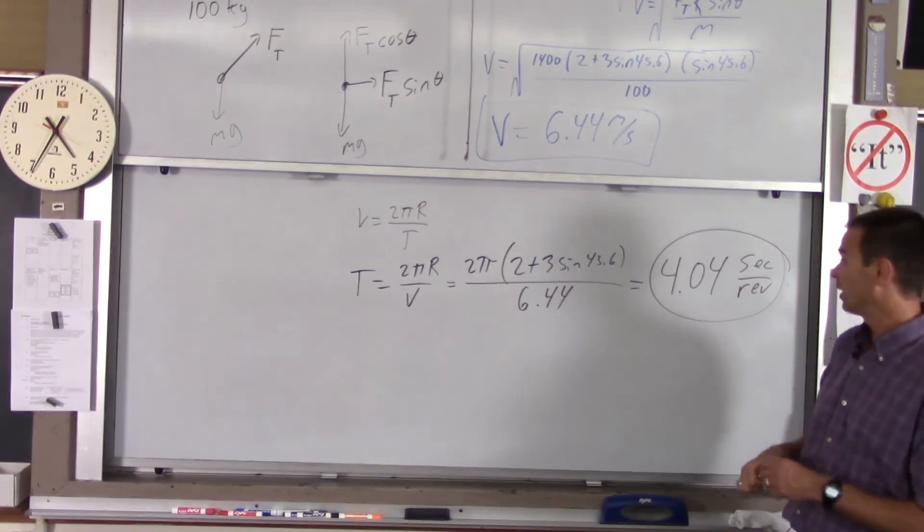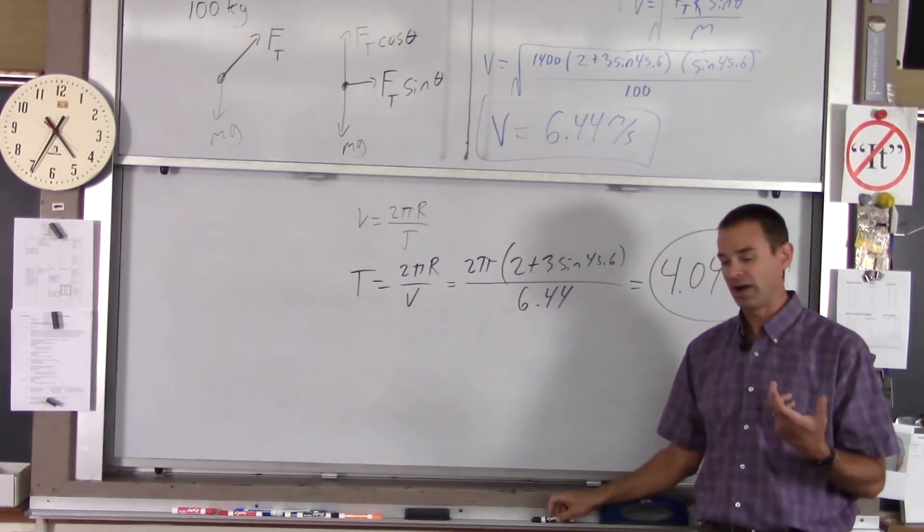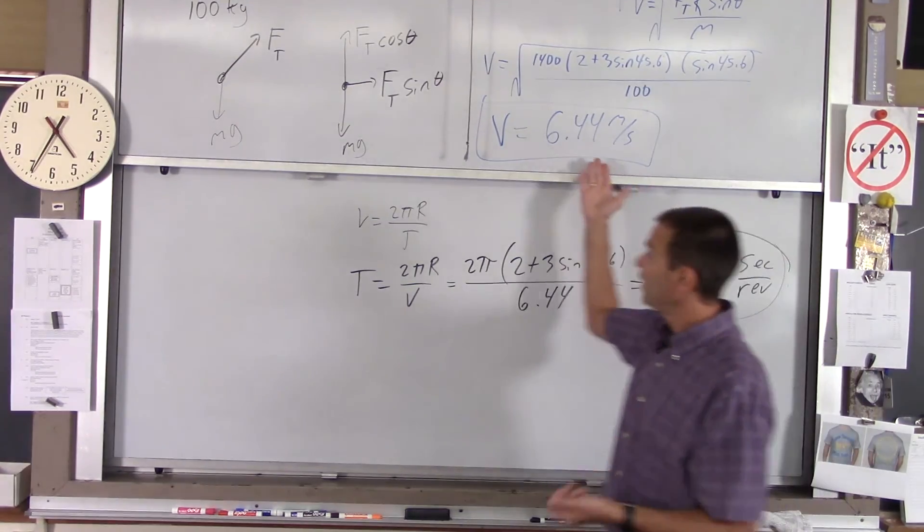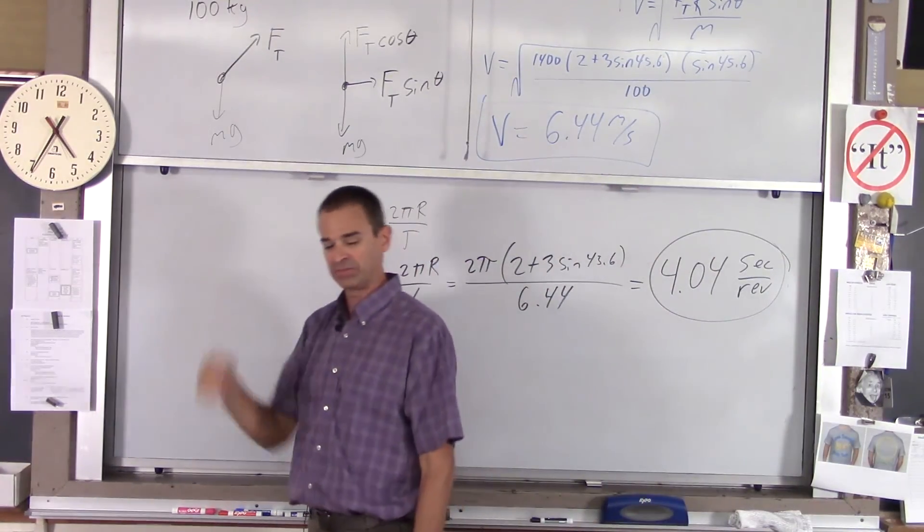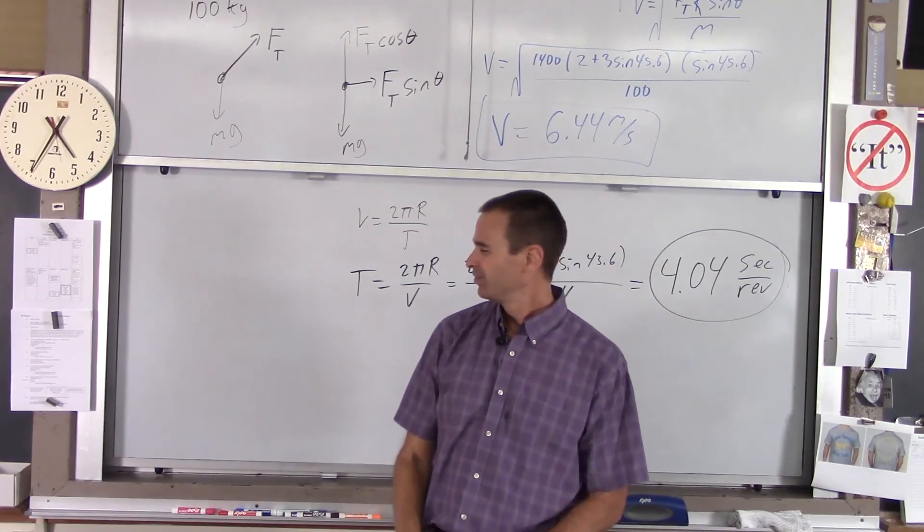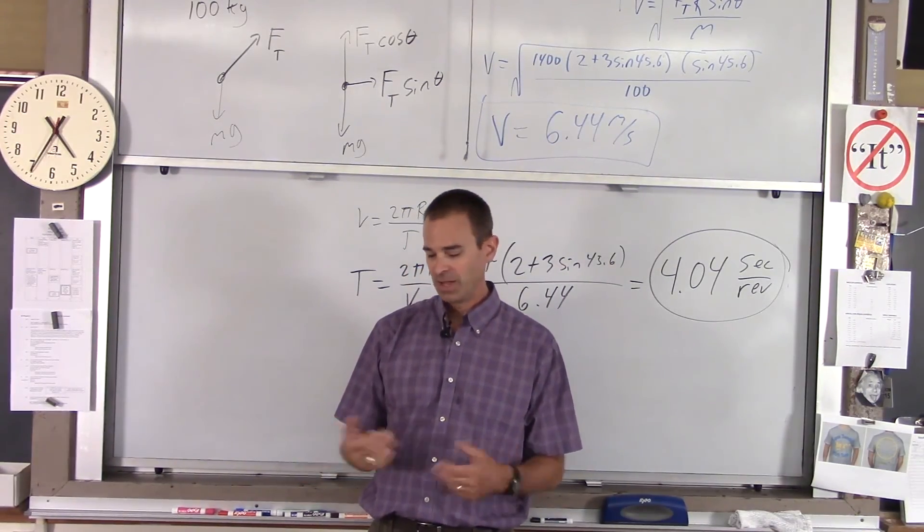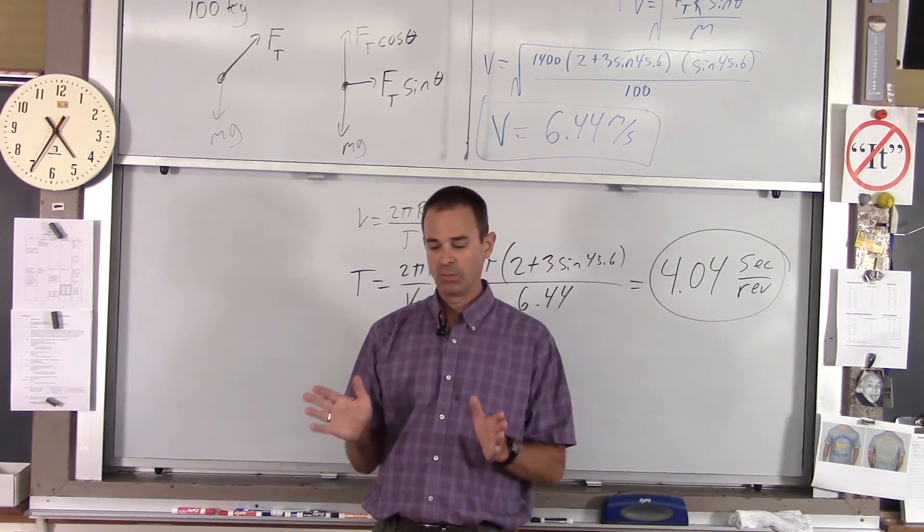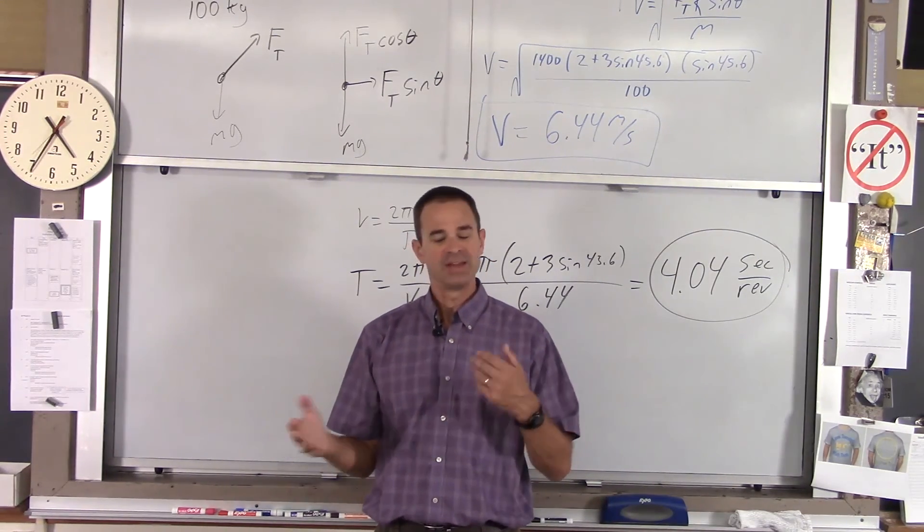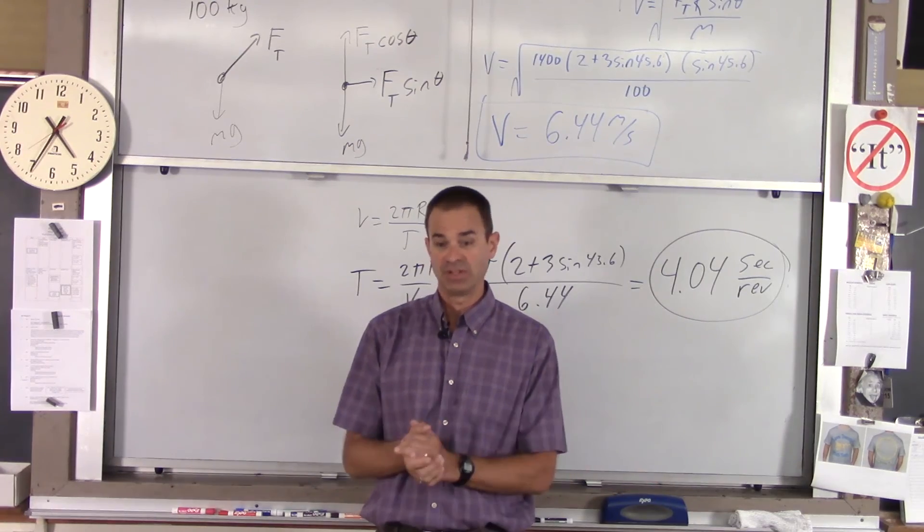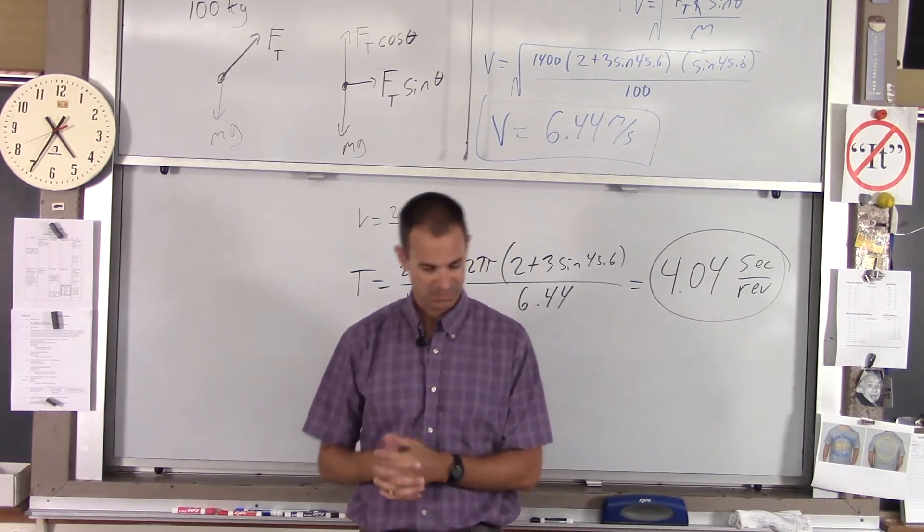So that's how you find. That's the quickest they should be going around. If they're going around any quicker, they're going too fast. They exceed their max tension, and bad things happen. So that's an example of circular motion with forces in multiple directions and showing which force goes which way and finding, for instance, a max velocity given a max force. Thank you.